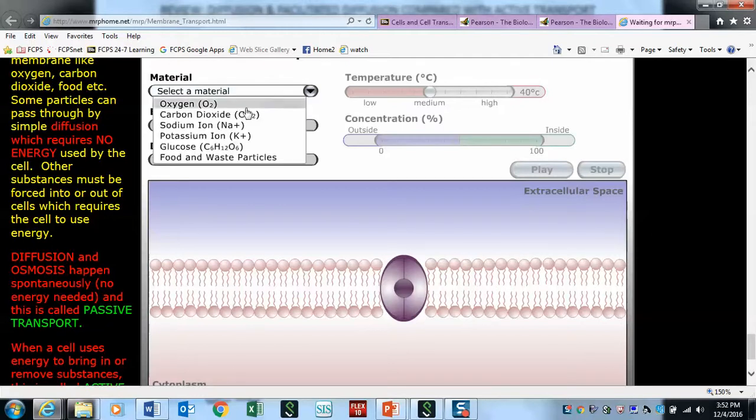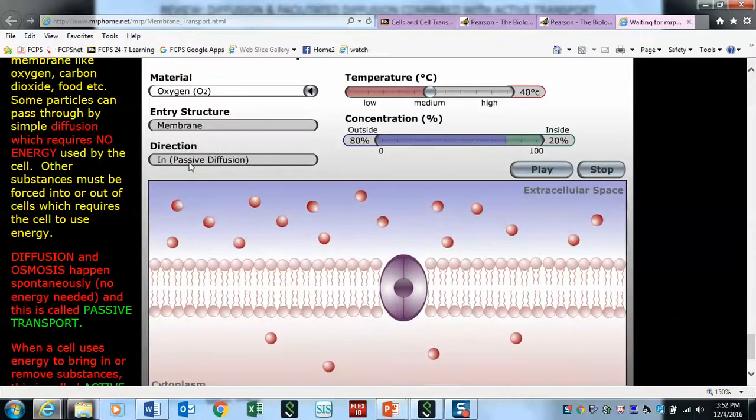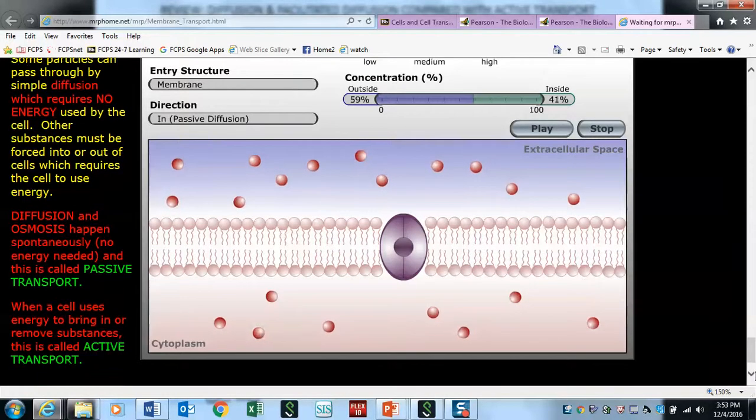Let's pick a molecule. When you click that, it says passive diffusion. Pay close attention - there's 80% outside versus 10% on the inside. Watch when we hit play. It's going to move in and stop at equilibrium.